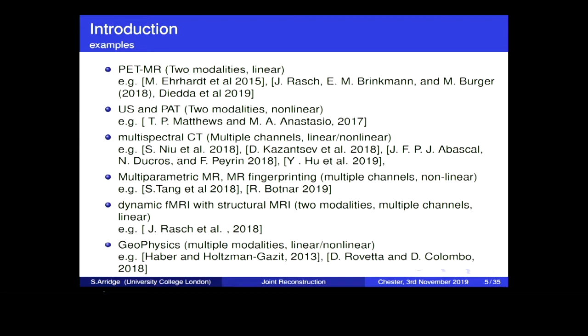And then in MR, there are techniques which you might call multi-parametric MR or the term MR fingerprinting, where we have multiple channels. And here we really are addressing the nonlinearity of MR because we're trying to find the relaxation parameters and other density information directly from the Bloch equation. Then we can also consider time series. You can either think of dynamic imaging as a kind of just a time series in 3D, or you can think of each time point as a separate channel which are also coupled. In this paper, also by the Munster Group, they look at the problem of a temporal regularization which is enhanced by a high-resolution structural MR.